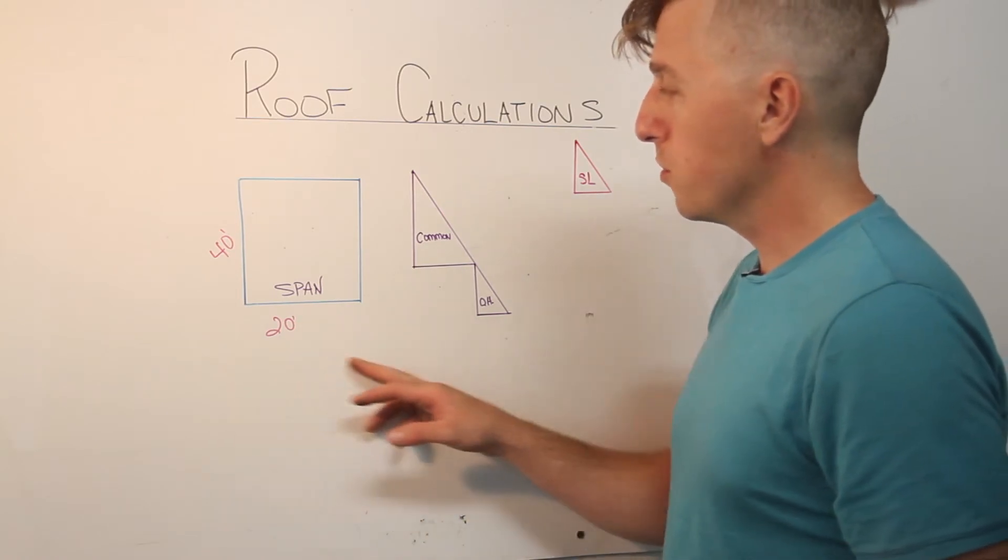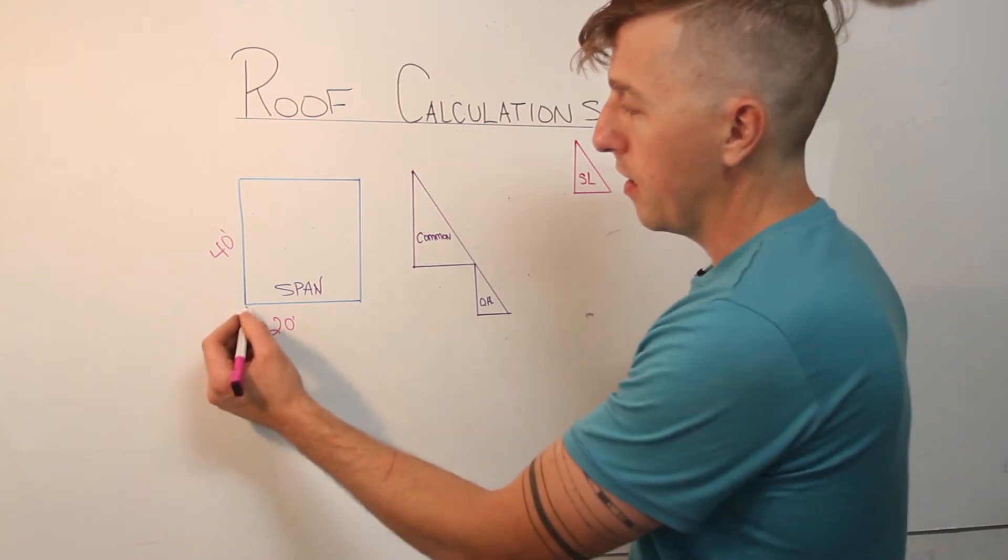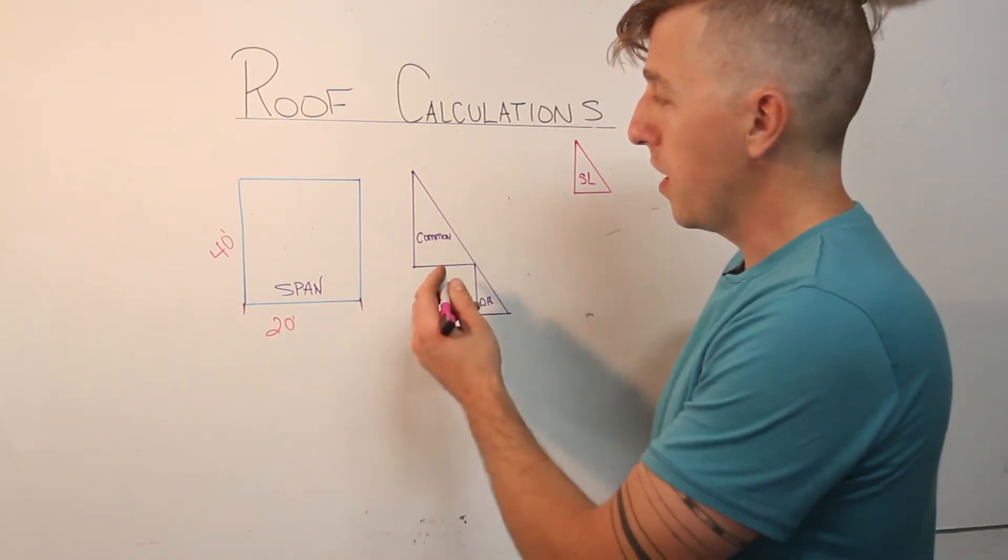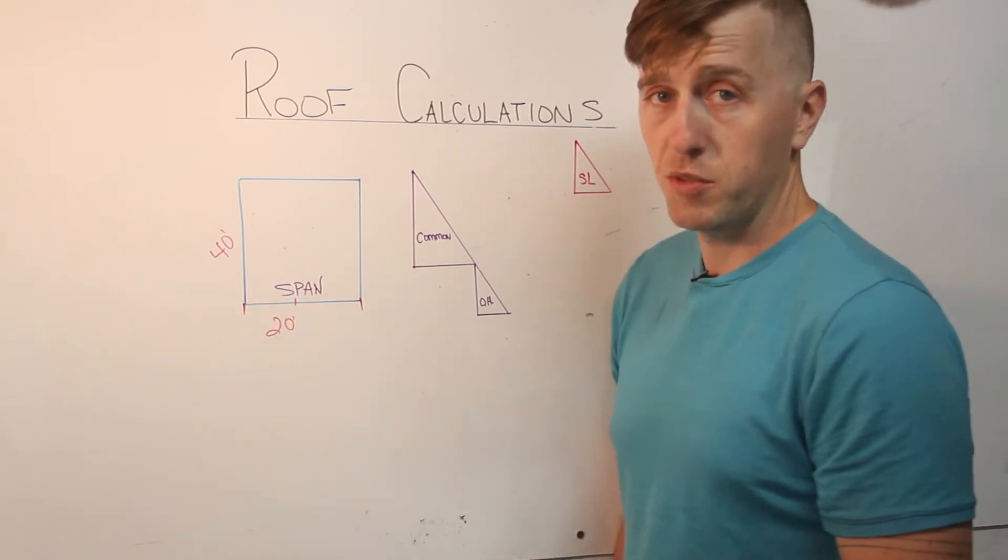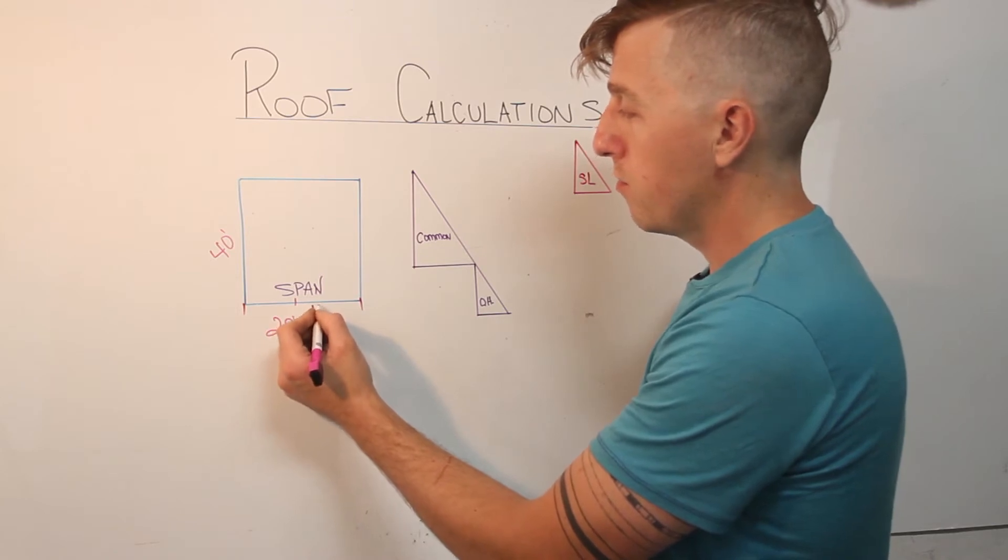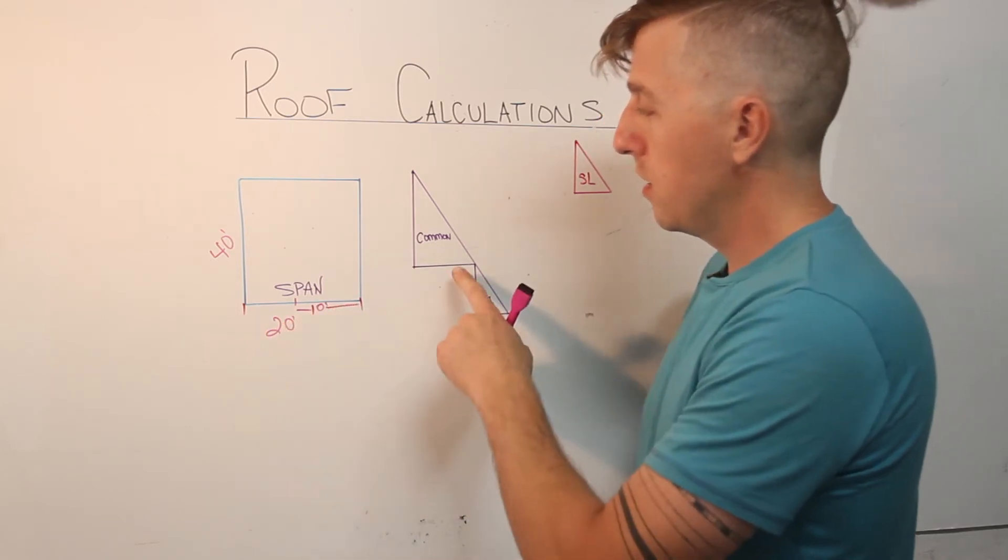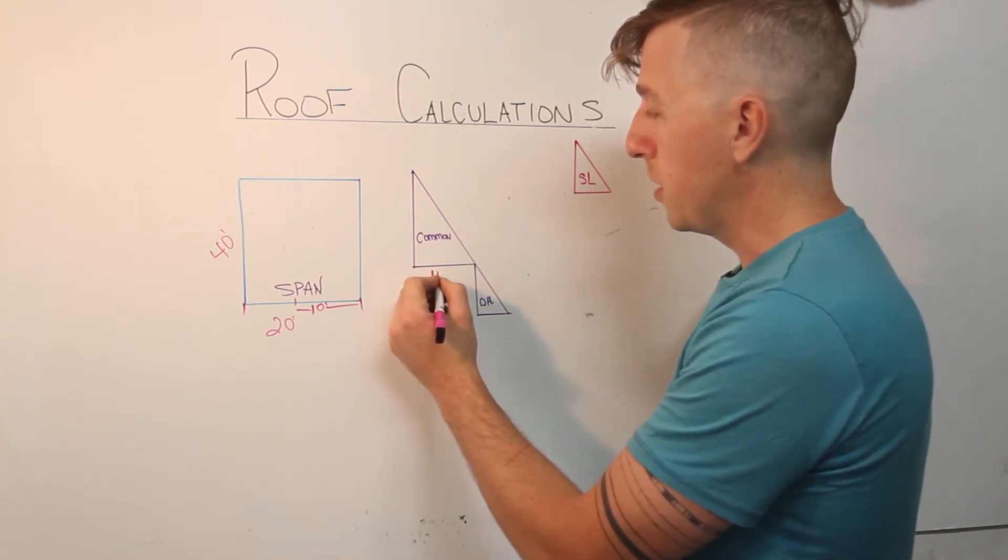The total span of the rafters from end to end is going to be 20 feet, but because the rafters meet up in the middle at a ridge board you always divide that span in half, so the actual span for each rafter side is going to be 10 feet. If you come over to your common rafter triangle, 10 feet is the base unit.